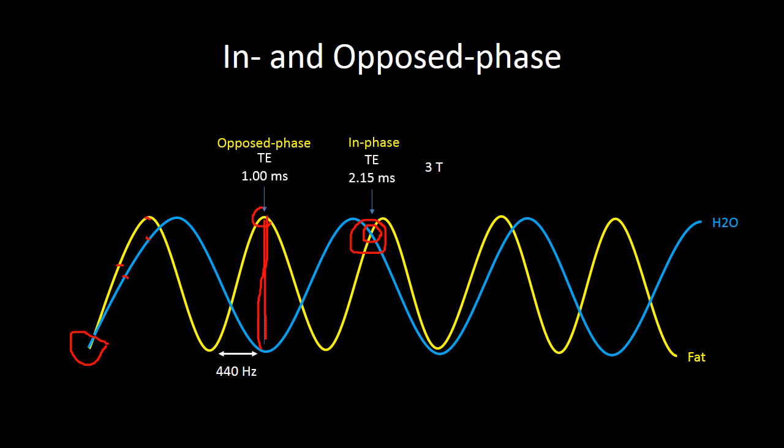At 3 tesla, because their difference in Larmor frequency is double compared to 1.5 tesla, the TE we need to catch the fat and water protons in opposed phase and in phase is divided in half — to 1 millisecond and about 2.15 milliseconds respectively.